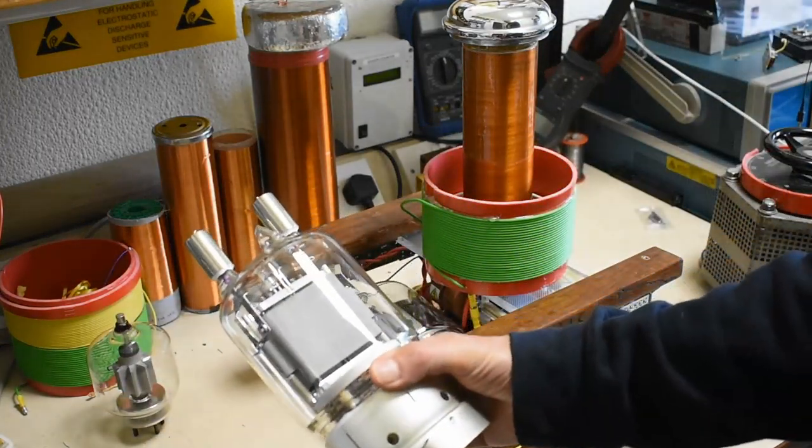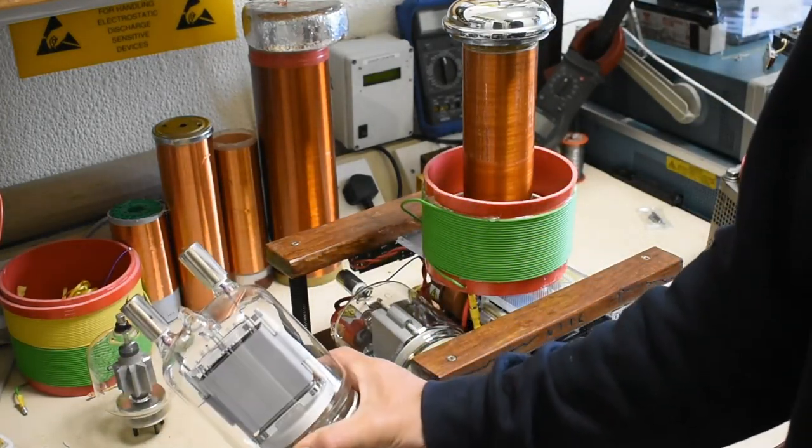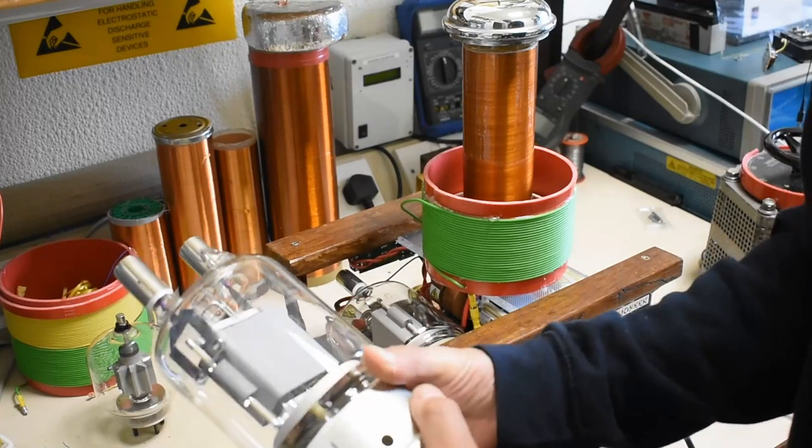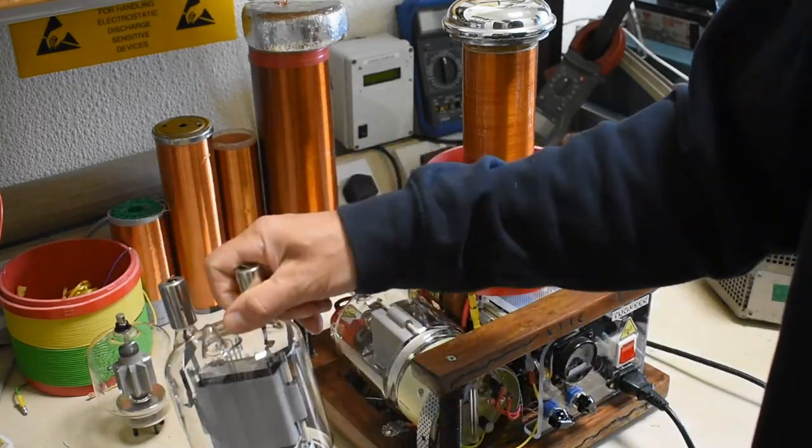So generally in Tesla coils, the vacuum tubes are kind of well abused. So the larger it is, the better.